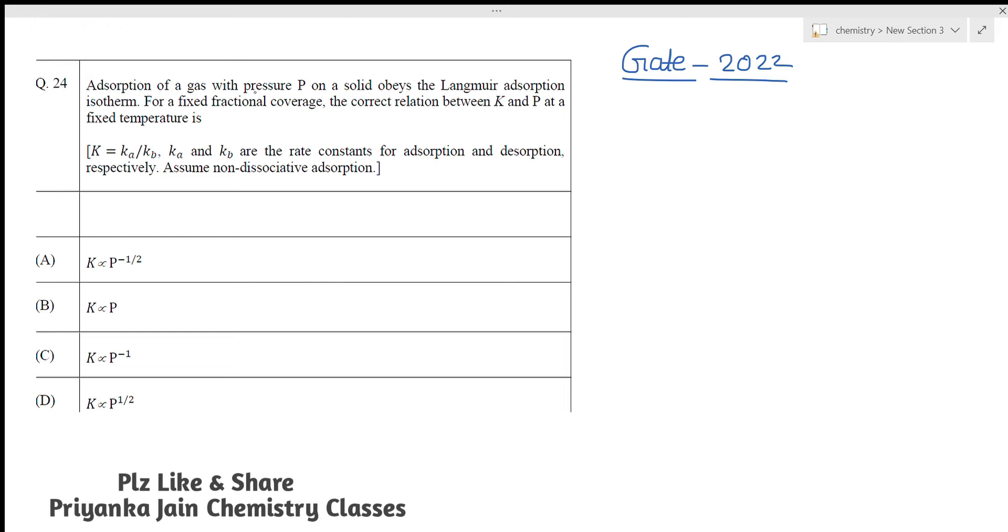Adsorption of a gas with pressure P on a solid obeys the Langmuir adsorption isotherm. For a fixed fraction coverage, the correct relationship between K and P at the fixed temperature is - we have given K is equal to Ka upon Kb. Ka and Kb are the rate constants for adsorption and desorption.